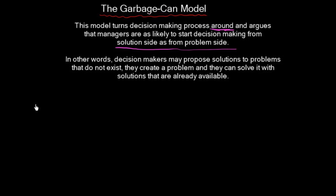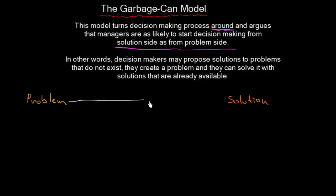In the traditional view, there is always some sort of problem, and there should always be some solution to this problem. There is a path between the problem and the solution — that is our search for a solution.